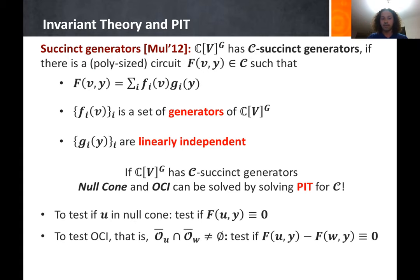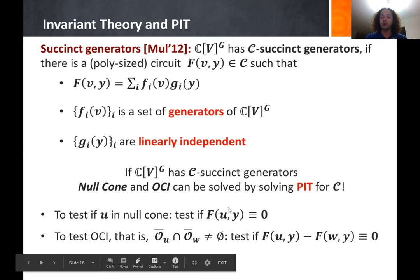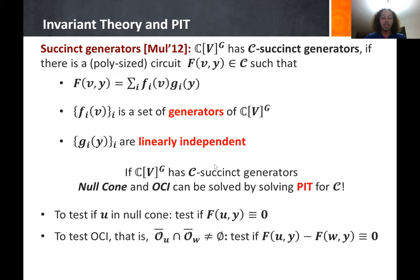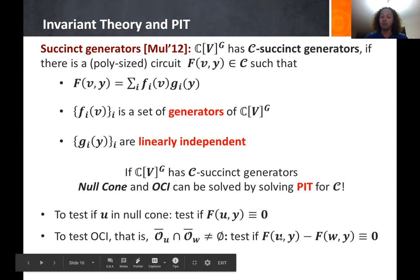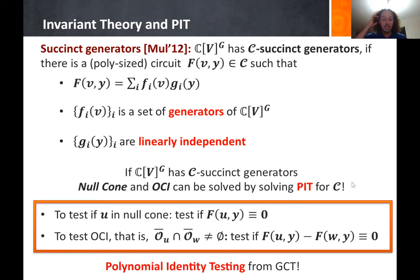If the ring of invariants for G acting on V has C-succinct generators, then the null cone and orbit closure intersection problems can both be solved by solving PIT for the circuit class C. To test if a point U is in the null cone, substitute V=U in F to get a polynomial only in Y, and test if it is identically zero. To test if orbit closures of U and W intersect, test if F(U,Y) − F(W,Y) is identically zero. This motivates polynomial identity testing from invariant theory and geometric complexity theory.